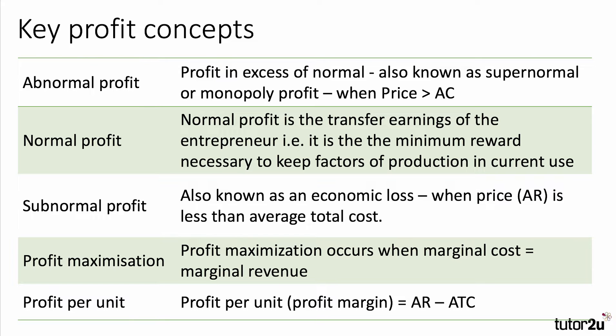Normal profit is the opportunity cost of being in business. Therefore, if a firm is covering cost per unit — if price equals average cost — then we can tell that the firm is making normal profit. Subnormal profit is obviously a worse situation: it's when a firm is making an economic loss, when the price per unit it's charging is below the average total cost.